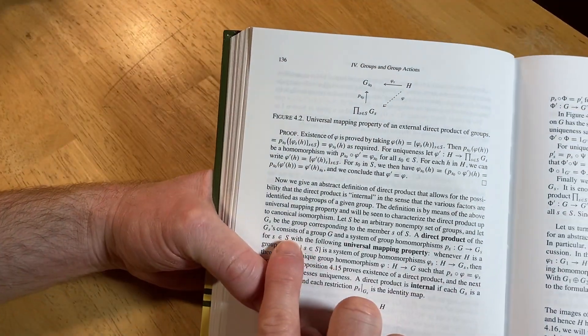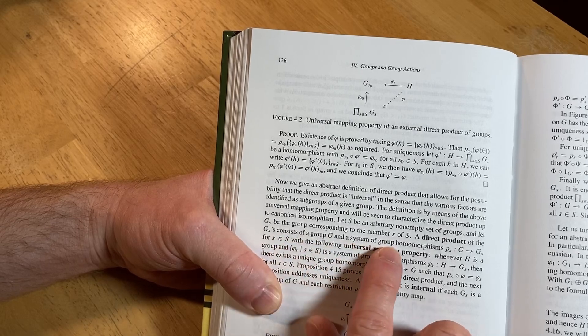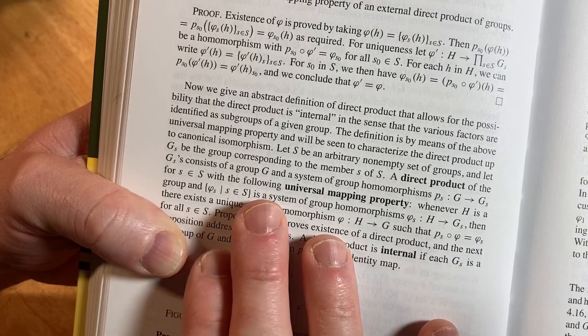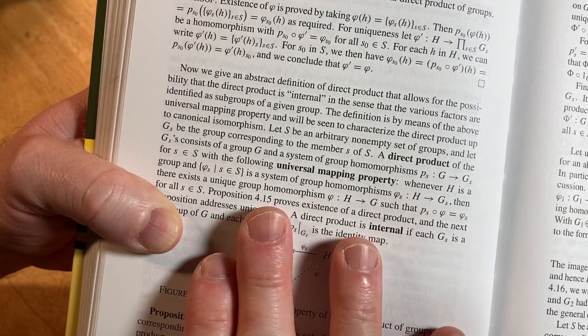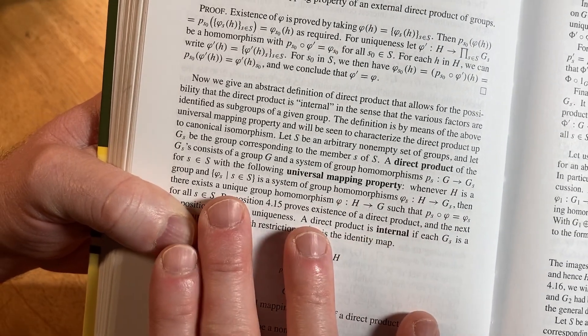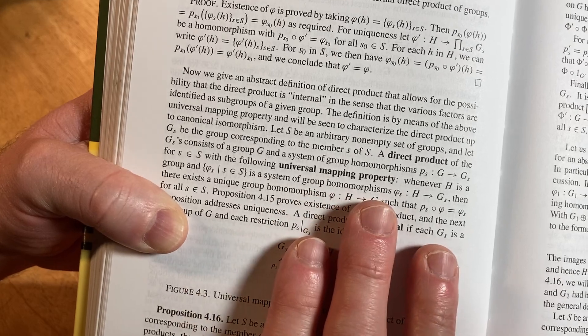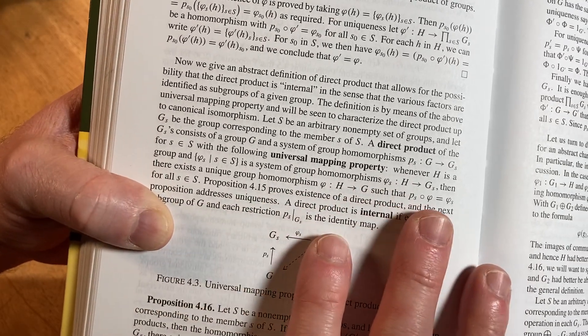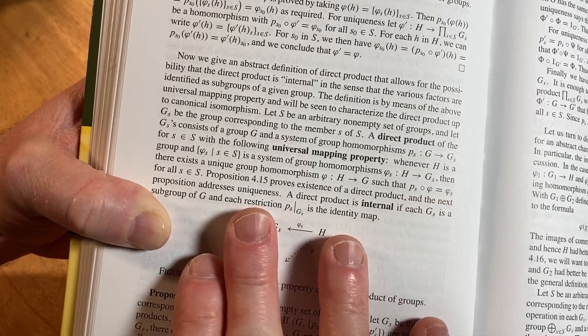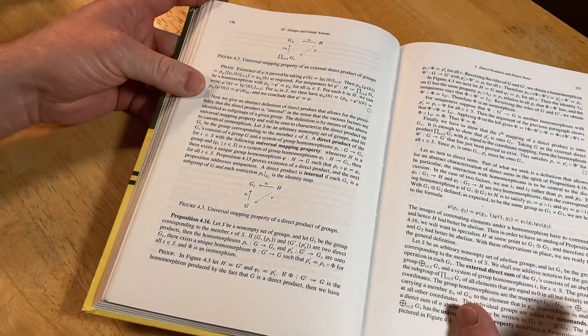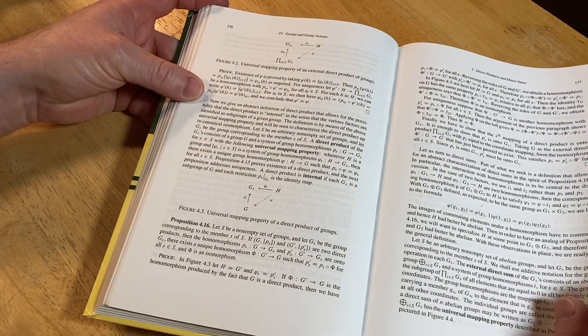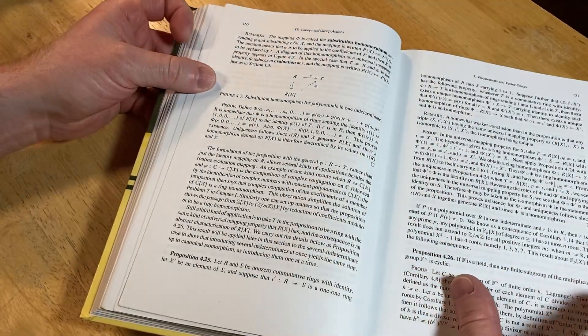What's this? A direct product of the Gₛ is consisted of a group G and a system of group homomorphisms for s in S, with the following universal mapping property: whenever H is a group and is a system of group homomorphisms, then there exists a unique group homomorphism such that that composition is equal to that. Oh I see, I see. It's the universal mapping property of direct products.